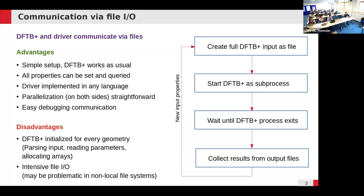Of course, if it's this simple, there must be some disadvantages. The biggest problem is that you always run the full cycle — you have to initialize DFTB+ for every geometry. For large systems with thousands of atoms, initialization times are negligible, but for very small systems calculated millions of times, initialization can become significant. It also requires a lot of file I/O, which can slow things down on clusters where file I/O is problematic.